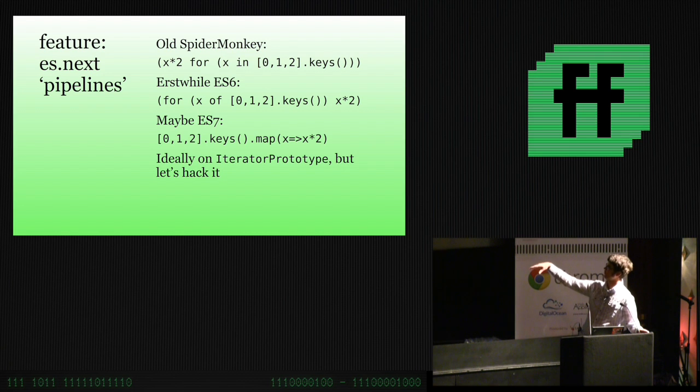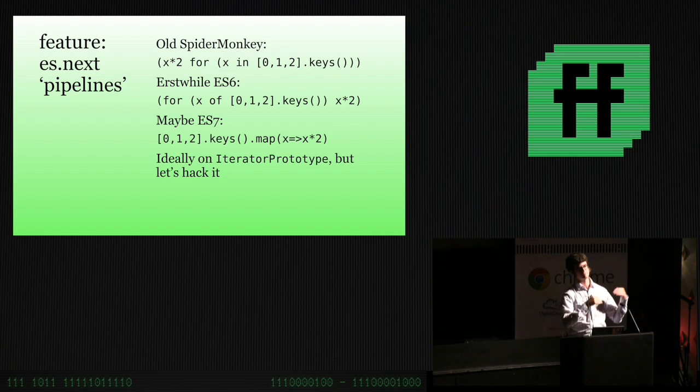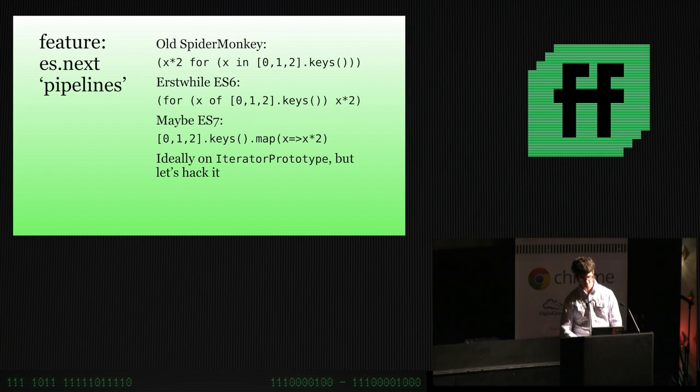Comprehensions is the old word. We had the old SpiderMonkey dialect with this first flavor of comprehensions, x times 2 for x of y. Then in ES6, we had generator comprehensions for x of whatever, x times 2. I implemented this in Firefox and it shipped, and they removed it from the standard. It's really offensive. But the new thing is you sort of chain pipelines. It has a real big advantage - you can polyfill it. You can't polyfill syntax, but you can polyfill this pipeline chain of iterators.